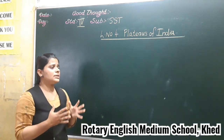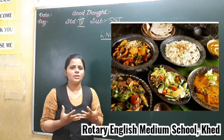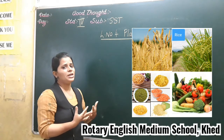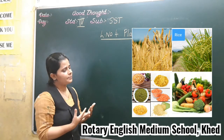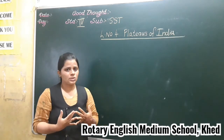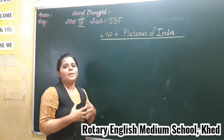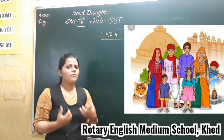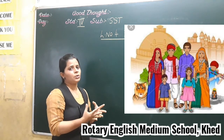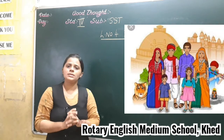Afterward we will see the food. What food do they have? The main food is wheat, rice, pulses and vegetables. Afterward we will talk about the dress. What type of dress do the people wear? Mostly the men wear dhoti and kurta, and the women wear saree.